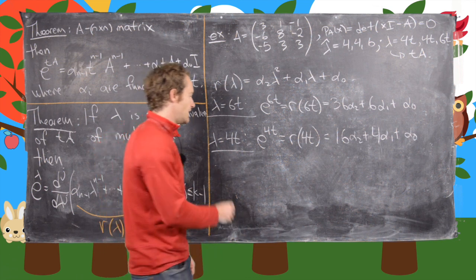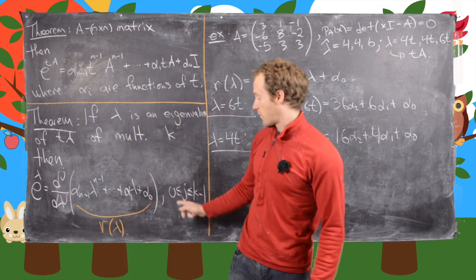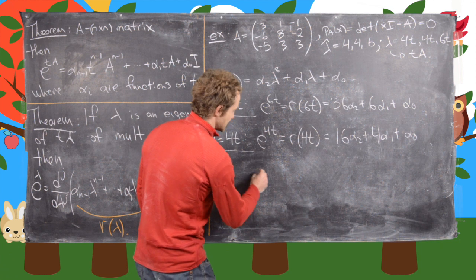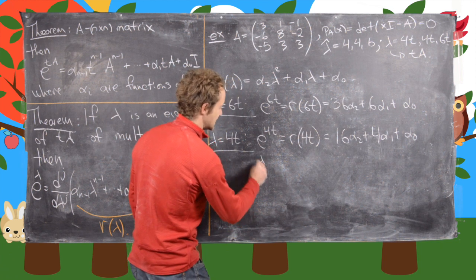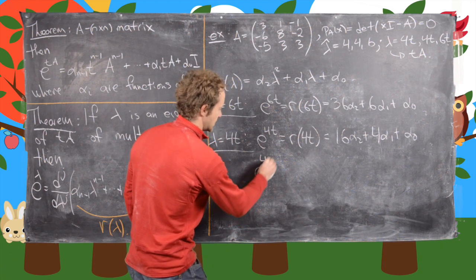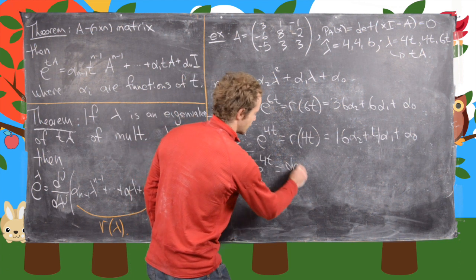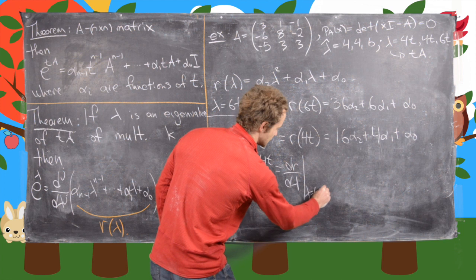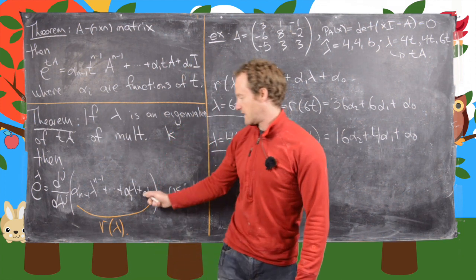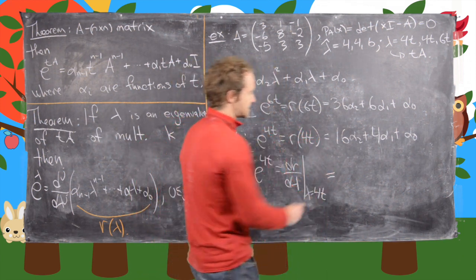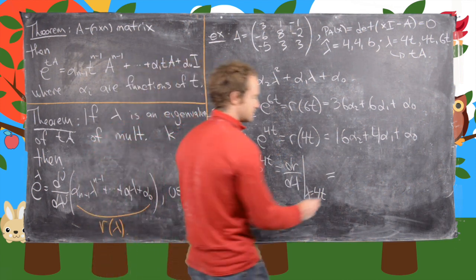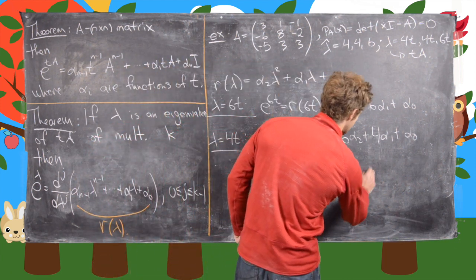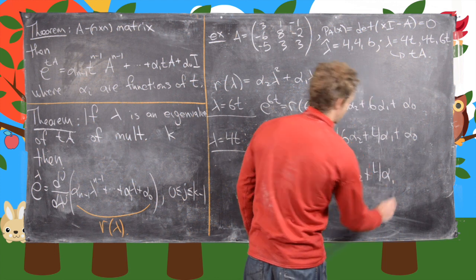Okay, and then also we have one for the derivative of r(lambda). So that means we also have an equation: e to the 4t equals the derivative of r with respect to lambda evaluated at lambda equals 4t—so that's how I'll notate this over here. So notice in this case we'll get 8*alpha_2 + 4*alpha_1.